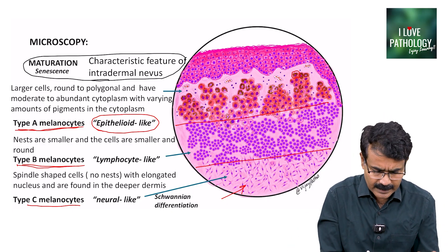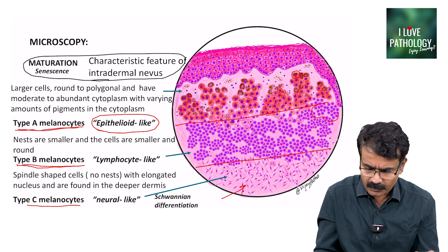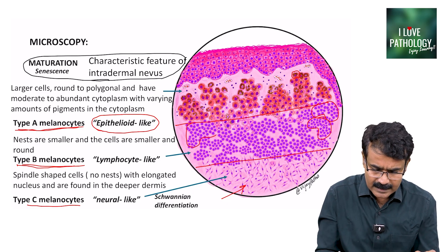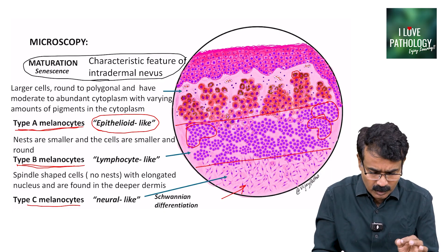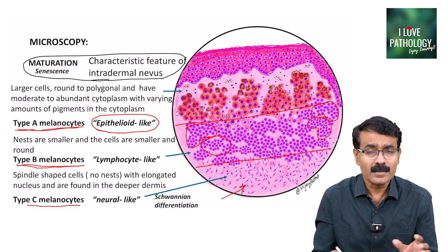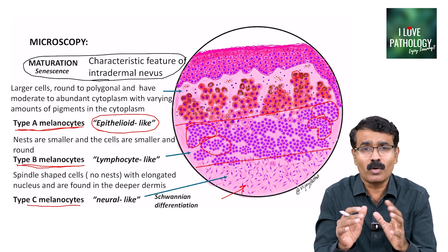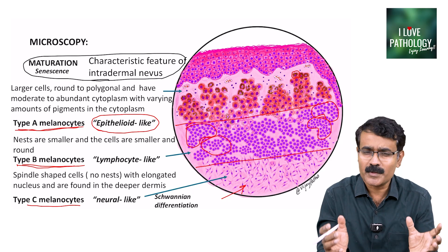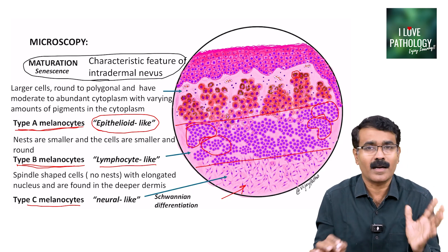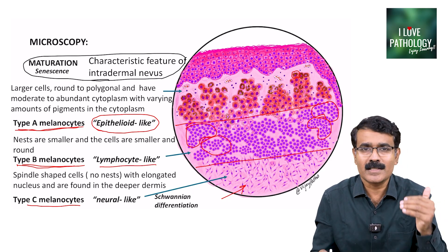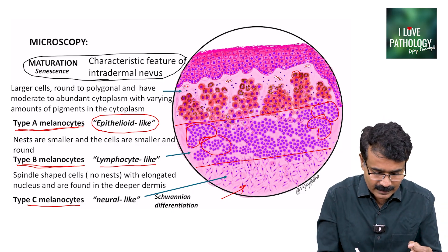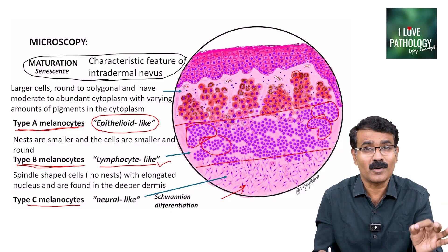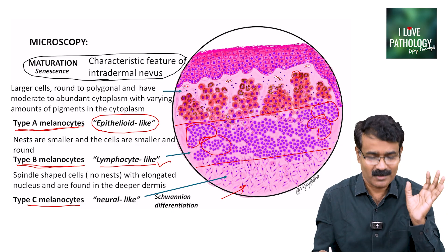Type B melanocytes are in the form of nests of cells and are smaller compared to type A cells. They look more like a lymphocyte — small and round — and that's why they are called lymphocyte-like melanocytes.